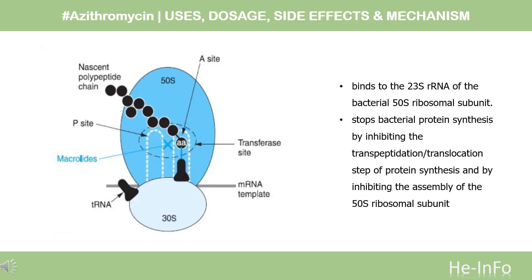In order to replicate, bacteria require a specific process of protein synthesis enabled by ribosomal proteins. Azithromycin binds to the 23S rRNA of the bacterial 50S ribosomal subunit. It stops bacterial protein synthesis by inhibiting the transpeptidation/translocation step of protein synthesis and by inhibiting the assembly of the 50S ribosomal subunit. This results in the control of various bacterial infections. The strong affinity of macrolides, including azithromycin, for bacterial ribosomes is consistent with their broad-spectrum antibacterial activities.